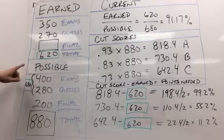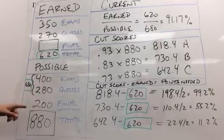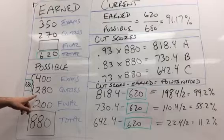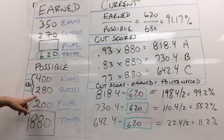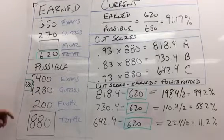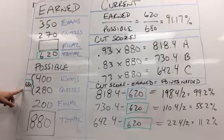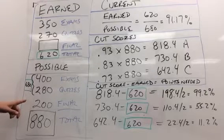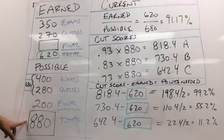First of all, we're going to start with the points possible. In this class they have four exams of 100 points each, they have seven quizzes of 40 points each. So four times 100 makes 400, seven times 40 makes 280, and they've done that so far. That's 680 points possible so far in the semester, but the final exam is 200 points, about a little less than a quarter of their grade, for a total of 880 points.